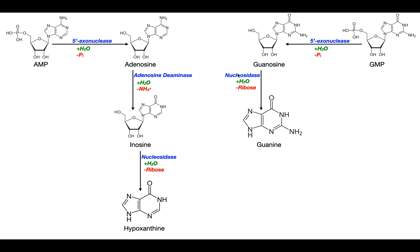Then nucleosidase — the same enzyme we saw in the adenine pathway — is going to hydrolyze off the ribose, this 5-carbon sugar, and leave us with the nitrogenous base, which is guanine.